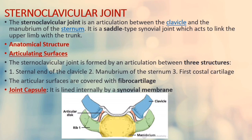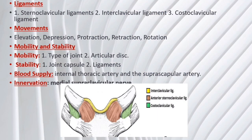The joint capsule of the sternoclavicular joint extends to the borders of the articular surfaces and is lined internally by a synovial membrane, which produces synovial fluid to reduce friction. The ligaments provide much of its stability. There are four main ligaments: the sternoclavicular ligaments (anterior and posterior) reinforce the capsule; the interclavicular ligament attaches to the sternal end of both clavicles and reinforces the capsule superiorly; the costoclavicular ligament attaches the first rib and costal cartilage to the inferior surface of the clavicle and is the main stabilizing force, resisting elevation of the pectoral girdle.